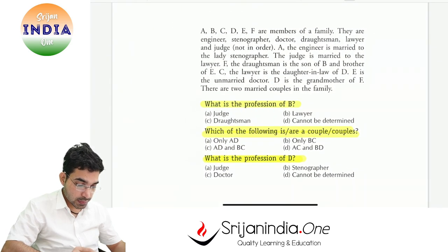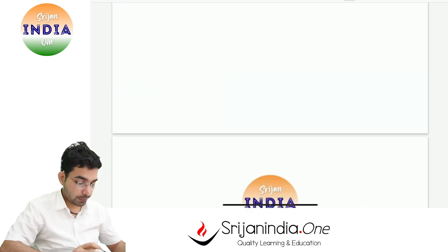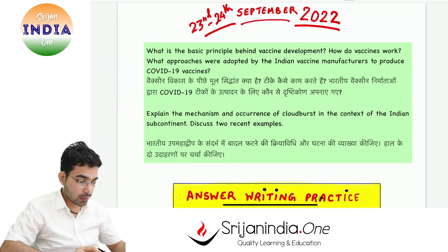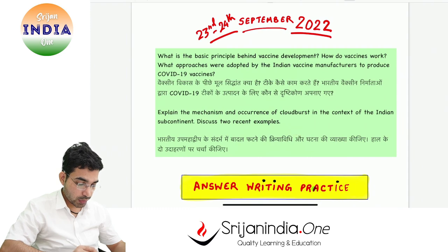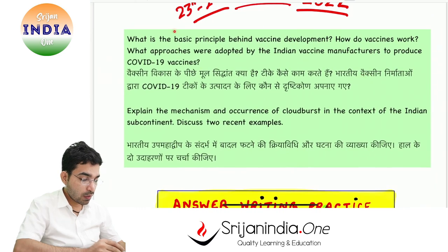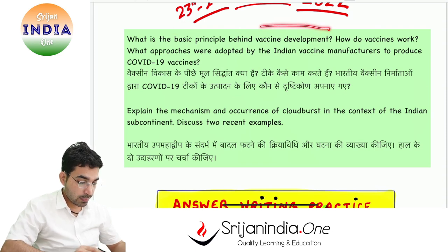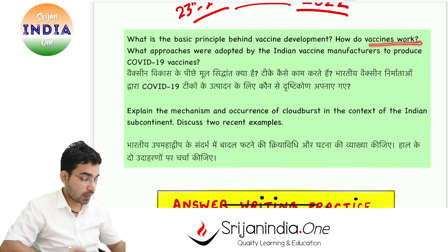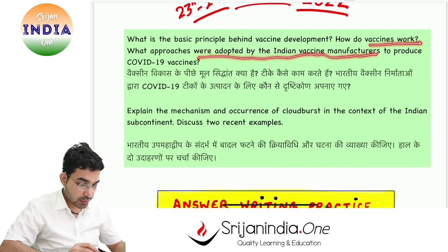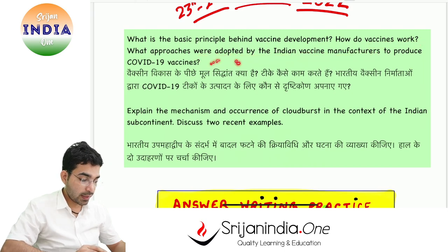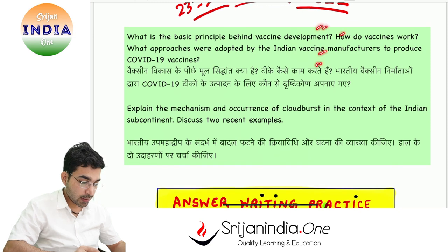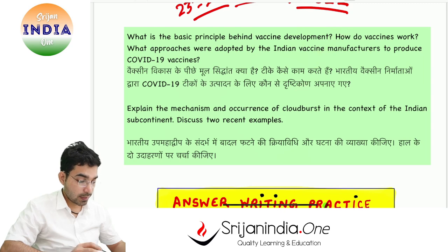This is CSAT - try to read and answer this question on general mental ability. For 23rd and 24th September 2022, here are two questions: What is the basic principle behind vaccination development? How do vaccines work? What approaches were adopted by Indian vaccine manufacturers to produce COVID-19 vaccination? This question has three parts - address all three.